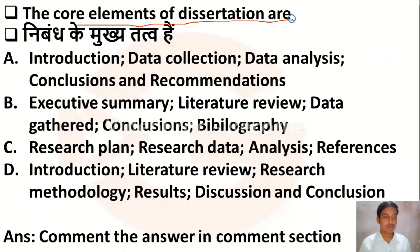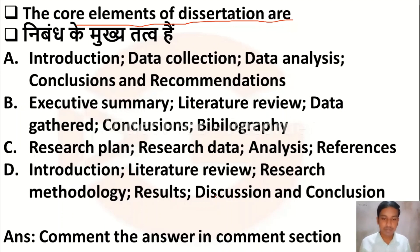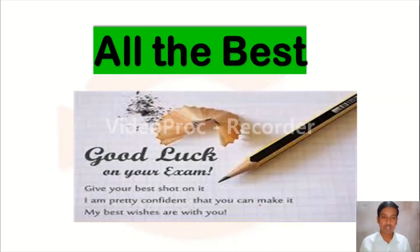The last question is: the core elements of a dissertation are — Option A: introduction, data collection, data analysis, conclusions and recommendations, Option B: executive summary, literature review, data gathered, conclusions, bibliography, Option C: research plan, research data, analysis, references, Option D: introduction, literature review, research methodology, research discussion, and conclusion. This question is for you to check your preparation level — please comment your answer in the comment box. Best wishes to all students.